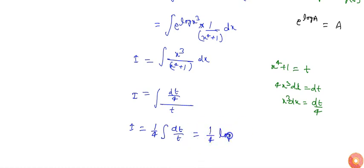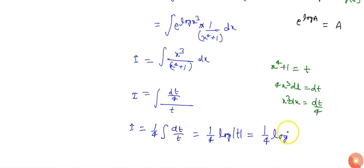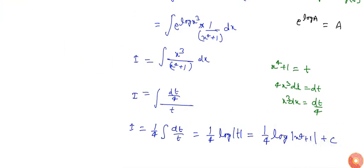So the integration transforms into (1/4)∫dt/t, which equals (1/4)·log(t). Substituting back the value of t, the final answer is (1/4)·log(x⁴+1) + C.